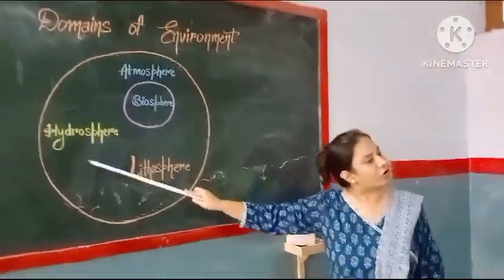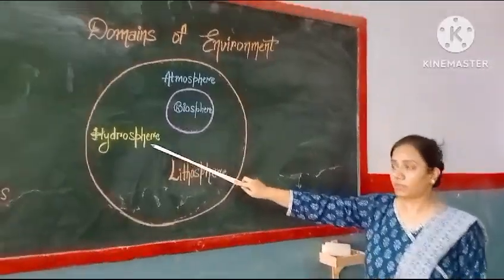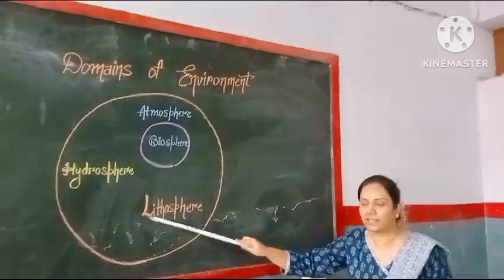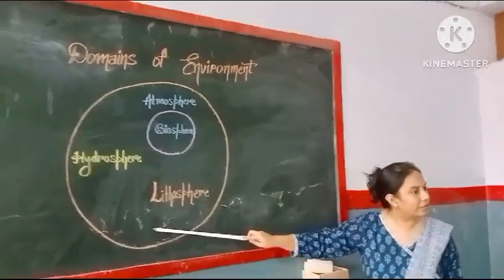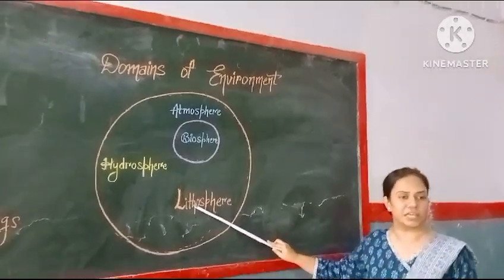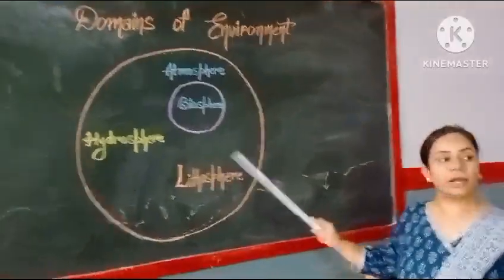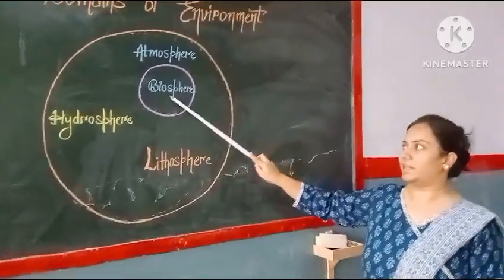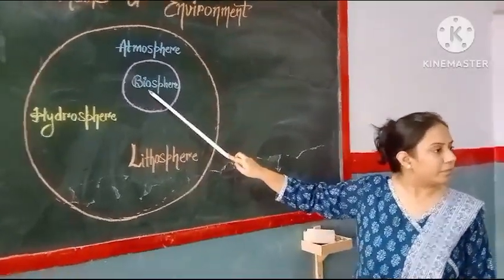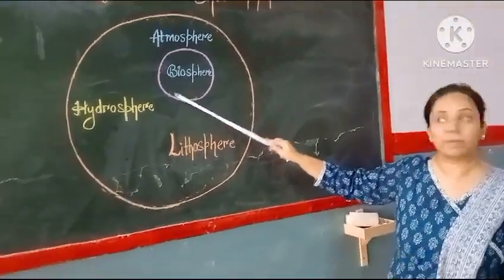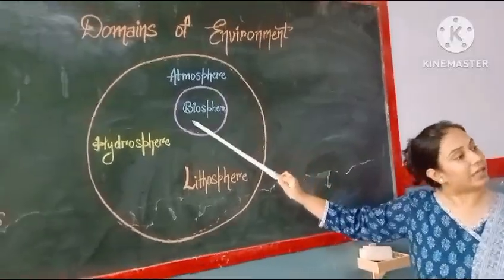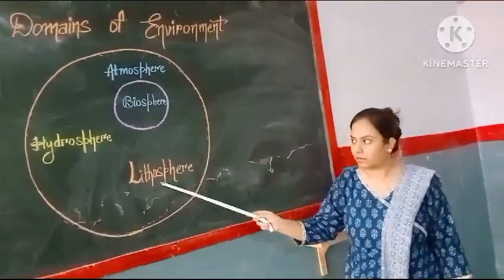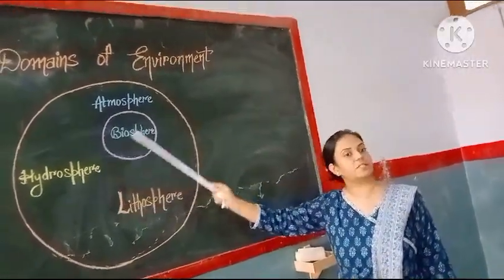That is called the Hydrosphere — because this is related to water. Next is the Lithosphere. Then, Biosphere. What is Biosphere? Biosphere is a narrow zone which includes land, air, and water — these three are included.